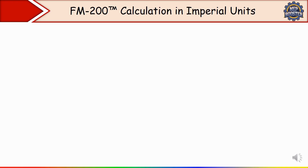FM 200 is normally used in data centers and server rooms, telecommunication facilities, control rooms, museums, aircraft, and military applications. The best advantages of using FM 200 are: very fast response within seconds, safe for people, no residue, no damage to electronics, and compact storage cylinders. Some limitations are also there: higher cost than water or CO2 systems, and it has some environmental impact as a greenhouse gas.